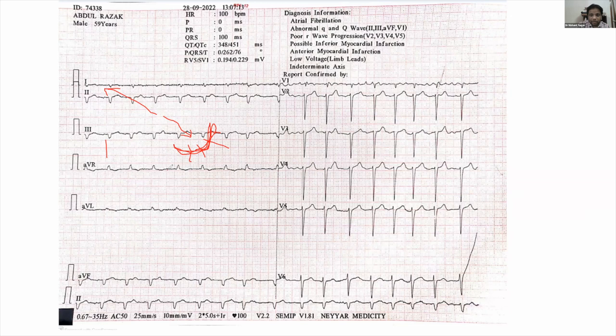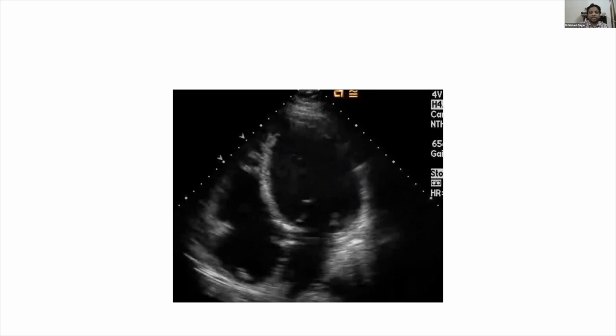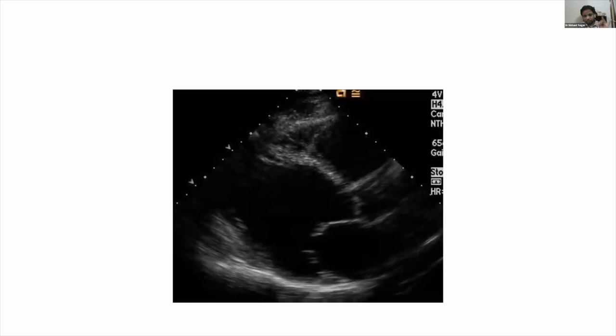What did this patient suffer from? Acute pulmonary edema. Why? Ischemic dilated cardiomyopathy evidenced by very poor R waves across the ECG, northwest axis, and atrial fibrillation — all suggesting a burnt-out DCM. The echo would show a dilated poorly contractile heart — a globular heart. So we've had one case of HFpEF and one case of HFrEF, both presenting in acute pulmonary edema.